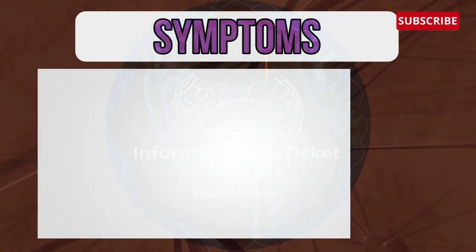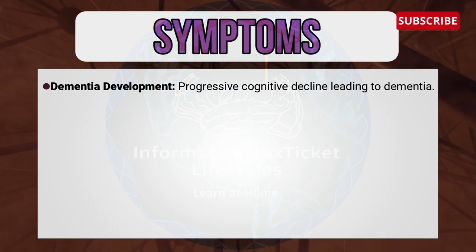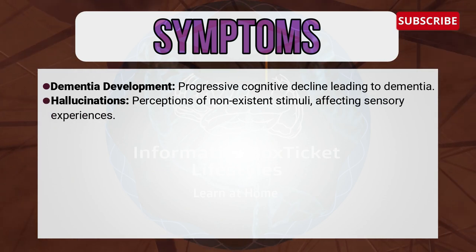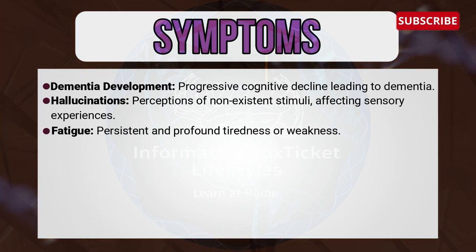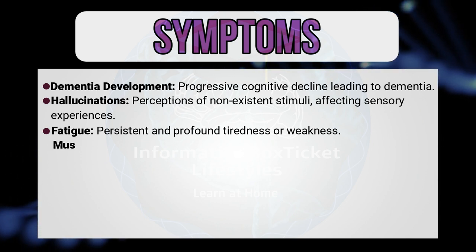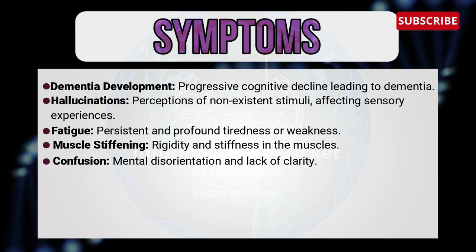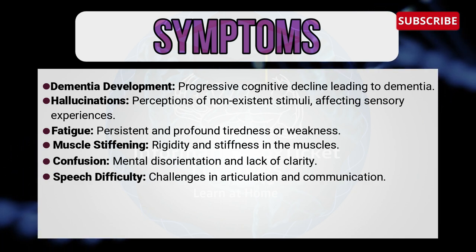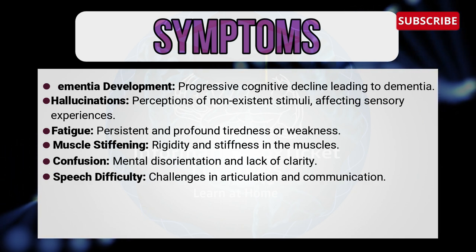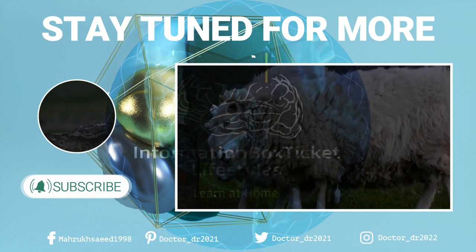Symptoms of prion disease include: dementia — progressive cognitive decline leading to dementia; hallucinations — perception of non-existent stimuli affecting sensory experience; fatigue — persistent and profound tiredness or weakness; muscle stiffening — rigidity and stiffness in the muscles; confusion — mental disorientation and lack of clarity; and speech difficulty — challenges in articulation and communication. So that's it for today. Thank you so much for watching till the end. Don't forget to like this video and subscribe to my channel and press the bell icon button.